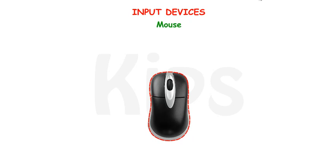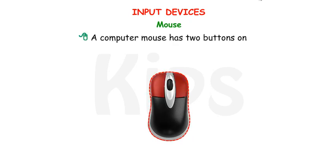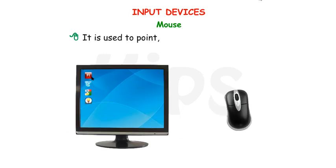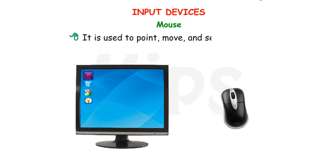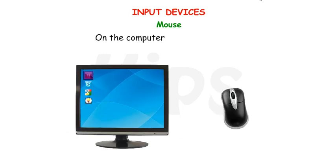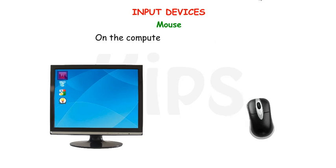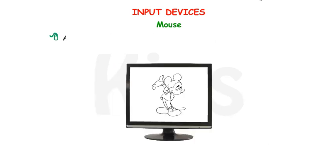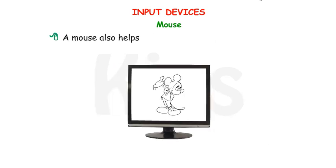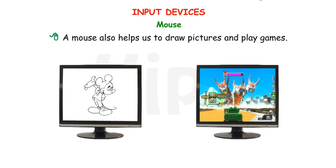Mouse. A computer mouse has two buttons on it. It is used to point, move and select any item on the computer screen or monitor. A mouse also helps us to draw pictures and play games.